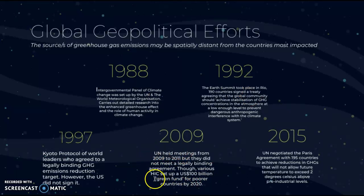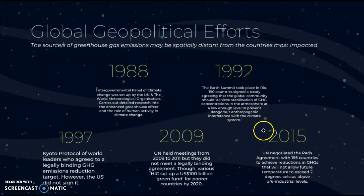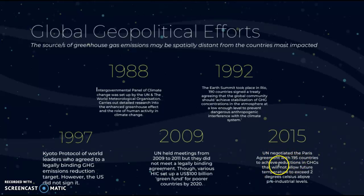Various high-income countries set up a $100 billion US dollar green fund for poorer countries by 2020. Then in 2015, the US negotiated the Paris Agreement with 195 countries to achieve reductions in greenhouse gases that will not allow future temperatures to exceed two degrees Celsius above pre-industrial levels.